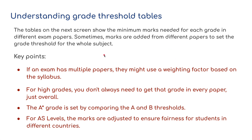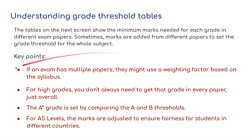Understanding grade threshold tables. The tables on the next screen show the minimum marks needed for each grade in different exam papers. Sometimes marks were added from different papers to set the grade threshold for the whole subject. If an exam has multiple papers they might use a weighting factor based on the syllabus. For high grades you don't always need to get that particular grade in every paper — just overall. So if you get a low mark on paper two but a really high mark on paper one, these grades are added together.